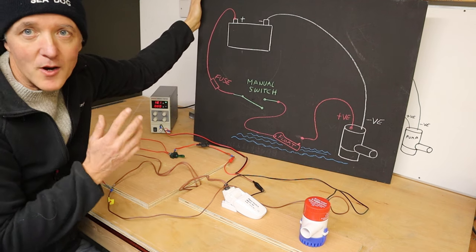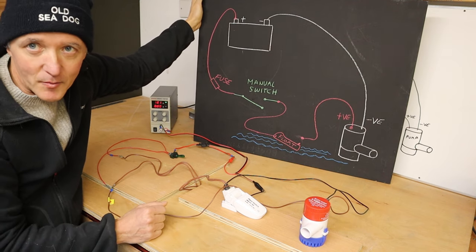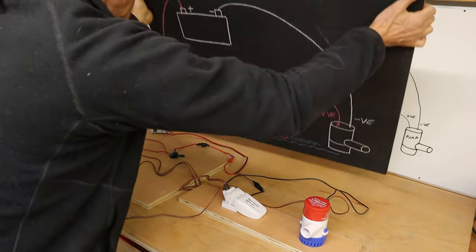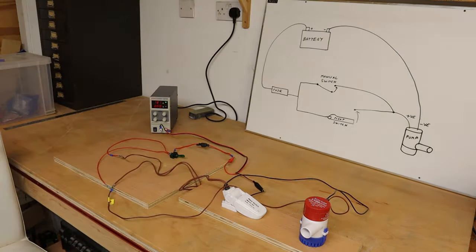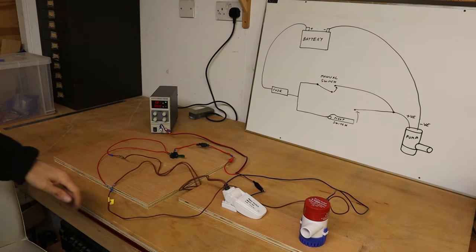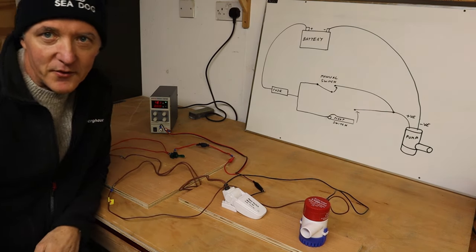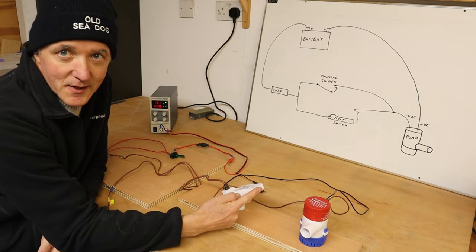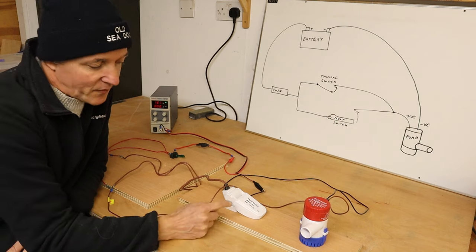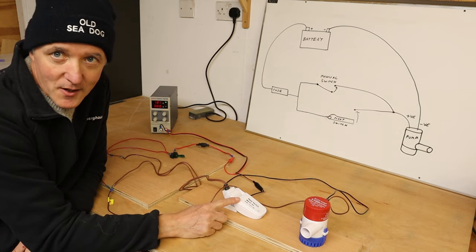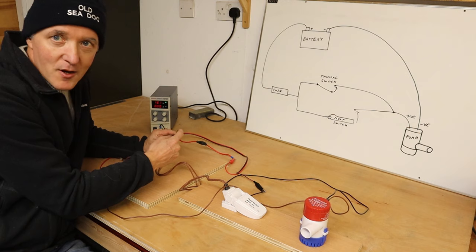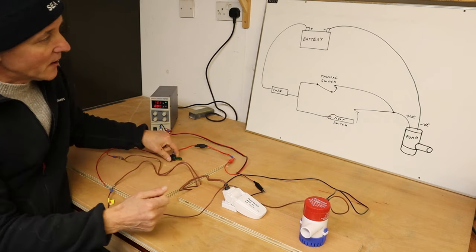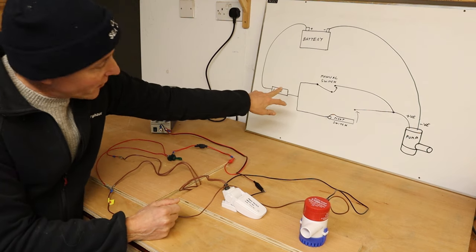So that brings us to a way of wiring things a little bit differently that improves on that situation, which is what we've done today. In this system, the system can be operated by the float, but if for any reason the float didn't work or didn't function, we've got a manual override switch. So that is shown on this circuit diagram here.